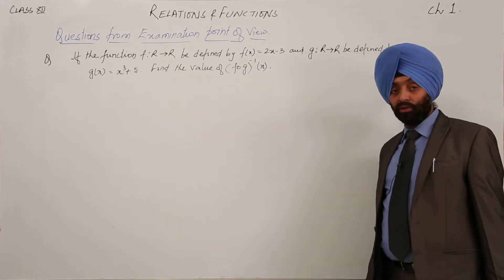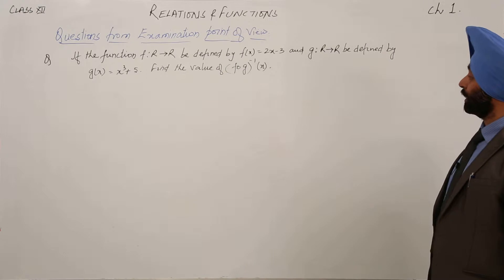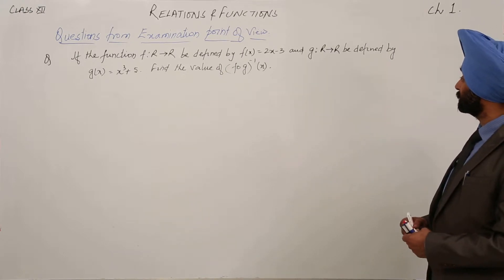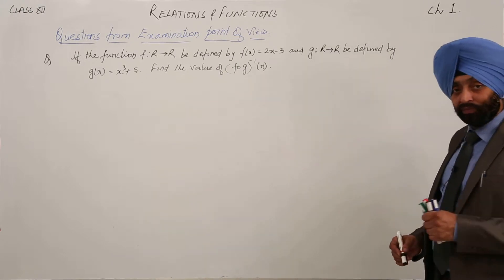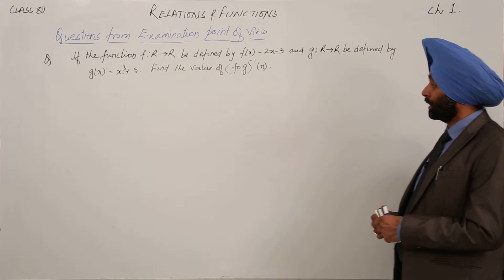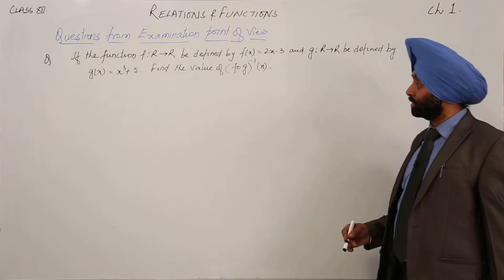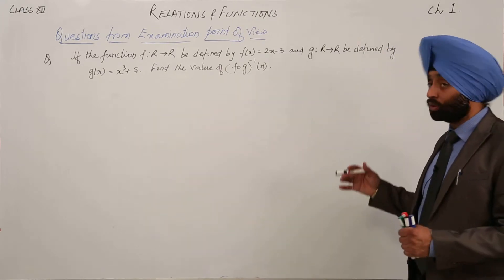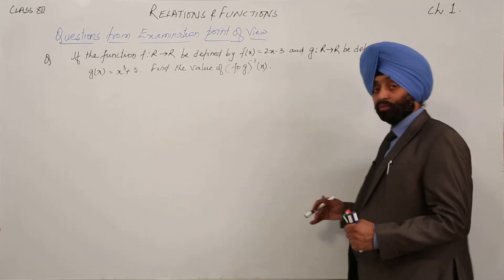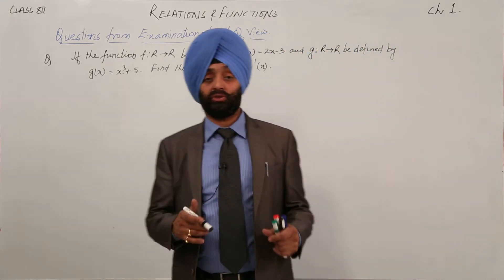If the function f from R to R is defined by f(x) = 2x minus 3, and a function g from R to R is defined by g(x) = x cube plus 3, then we have to find the inverse of fog.